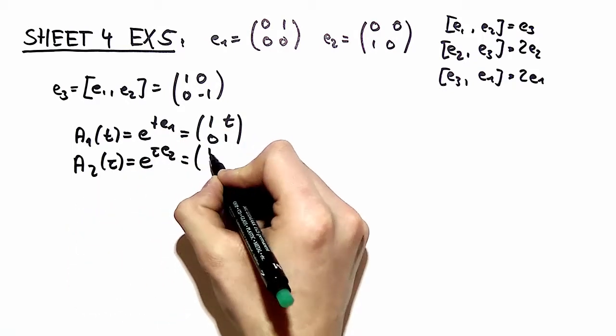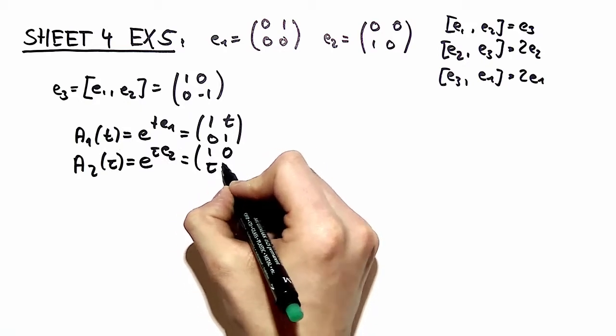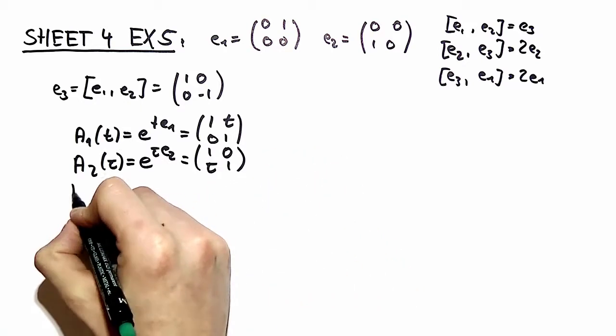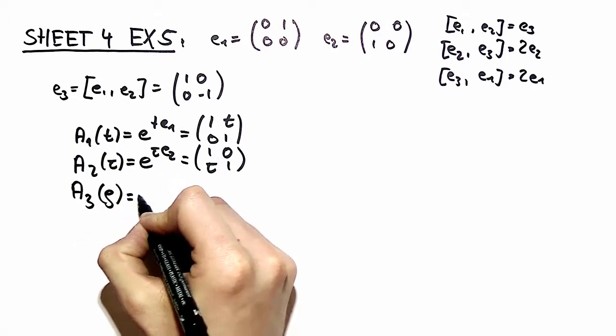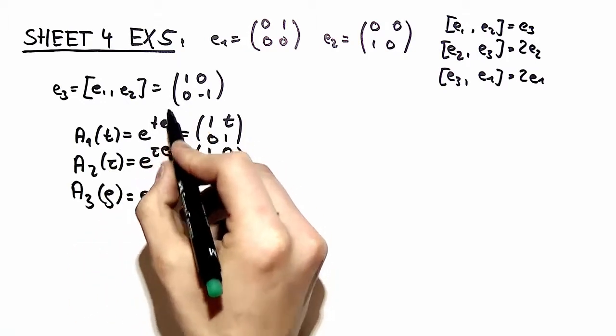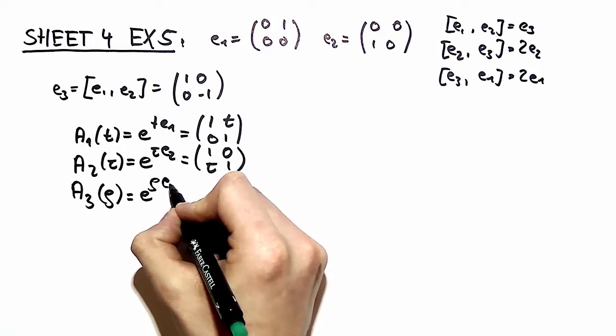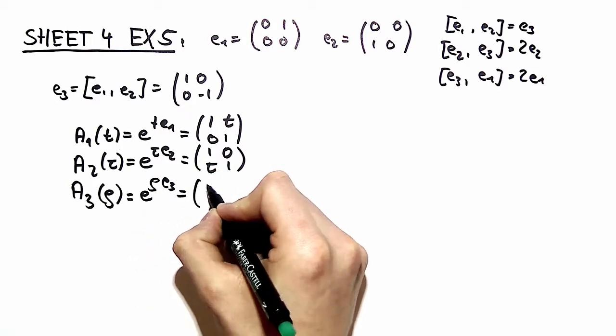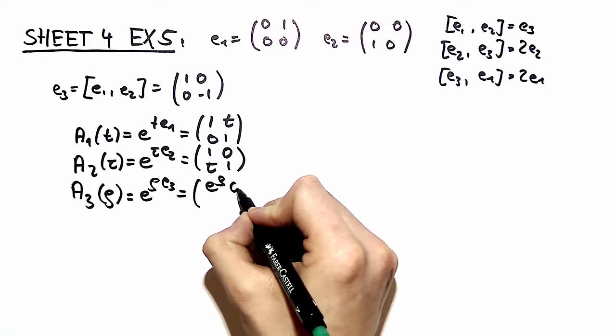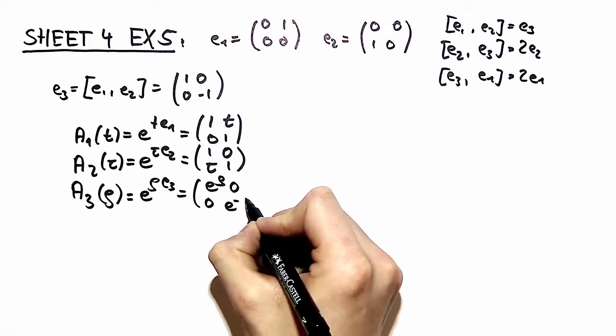A very similar calculation is the one for e2 with the parameter tau where you have one zero tau one. And for e3 you immediately spot the exponential function when expanding the Taylor series, so I won't go into any details here. This is just e to the rho zero zero e to the minus rho.